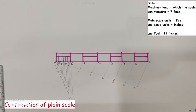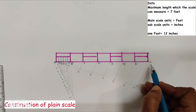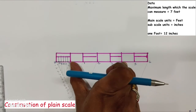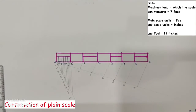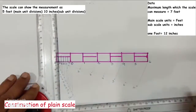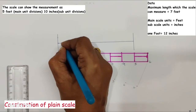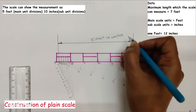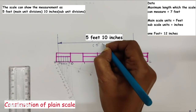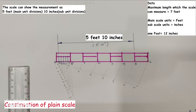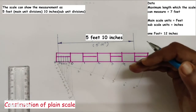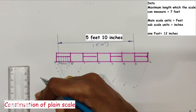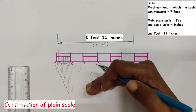We need to show the measurement of 5 feet and 10 inches on the scale. The main divisions are in feet and the subdivisions are in inches. So we take 5 feet from the main scale and 10 divisions from the subscale. These 5 feet and 10 inches can also be represented alternatively. Write the main unit 'FEET' below the right end of the scale, the subunit 'INCHES' below the first main division, and also write the RF factor below the scale.